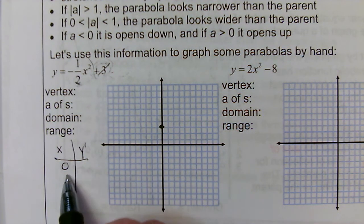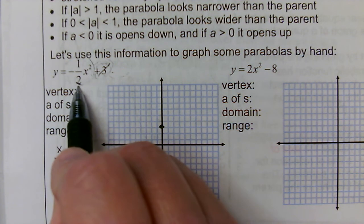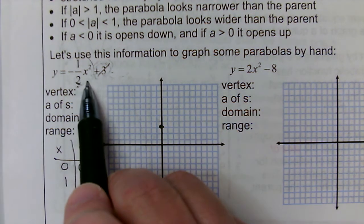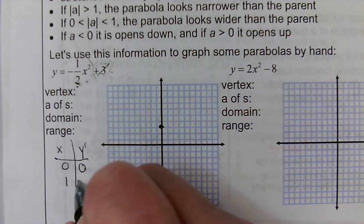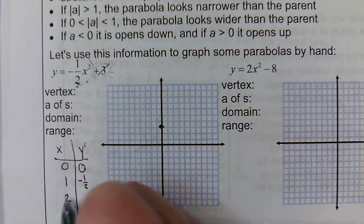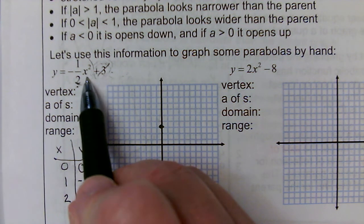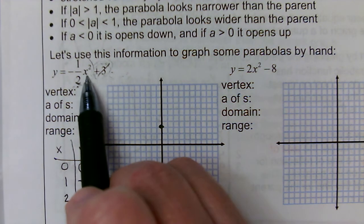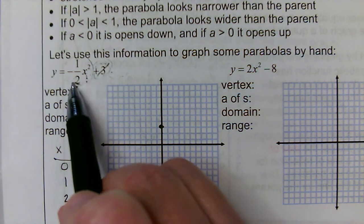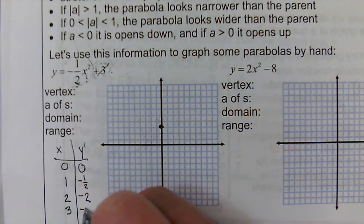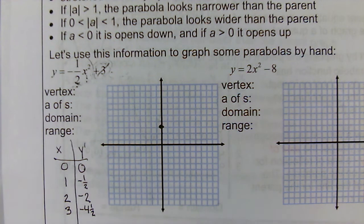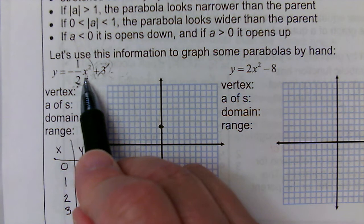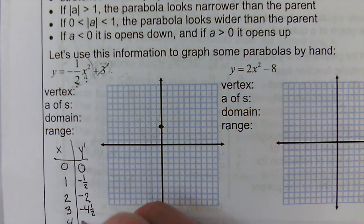When I put in 0, I get 0 — 0 times anything is still 0. When I put in 1 squared, that gives me 1, times negative one half gives me negative one half. When I put in 2, 2 squared is 4 times negative one half would be negative 2. When I put in 3, 3 squared would be 9 times negative one half is negative 9 halves, which reduces to negative 4 and a half. If I put in 4, 4 squared is 16 times negative one half would be negative 8.